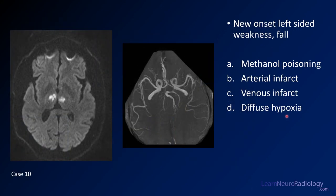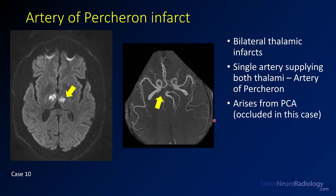Our final case, number 10, is a patient with new onset left-sided weakness and fall. You have a single diffusion image and a single MIP from an MR angiogram. Your choices are methanol poisoning, arterial infarct, venous infarct, or diffuse hypoxic injury. This is a case of arterial infarct — specifically an artery of Percheron infarct, where you get infarction of the bilateral thalami due to occlusion of a single supplying artery.